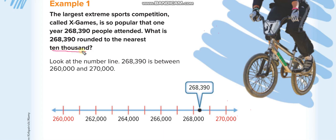They want us to round to the nearest ten thousand. Look at the number carefully — just two steps and the lesson is finished. First, find the ten-thousand place. Count with me: ones, tens, hundreds, thousands, ten thousands. So ten thousands is this digit. We circle the ten-thousands digit, which is 6.